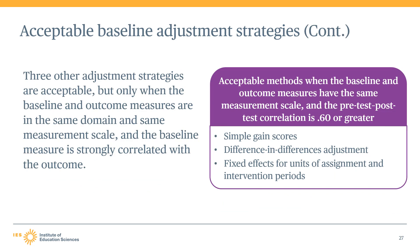Study authors might also use other types of adjustment strategies that assume a fixed relationship between the pre-test and post-test, such as simple gain scores, difference-in-differences adjustments, or fixed effects for units of assignment and intervention period. The WWC will consider these acceptable adjustment strategies only if the baseline and outcome measures are from the same outcome domain and on the same measurement scale, and they have a correlation between the pre-test and post-test of 0.06 or greater. Review teams may waive the requirement of a pre-test/post-test correlation of 0.06 or greater if the topic area protocol documents evidence that correlations between pre-tests and post-tests typically exceed 0.06, and the exception is applied consistently for all studies reviewed under the topic area protocol.